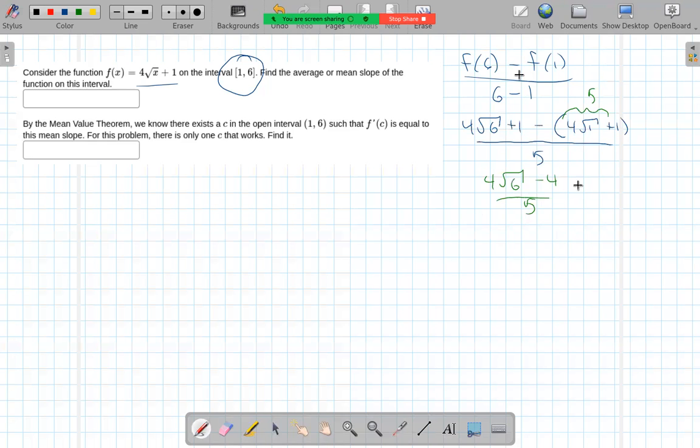And we could factor out the 4 that cleans things up a little bit. So maybe we could say this is 4 of 5th times the square root of 6 minus 1. Needs about the same amount of ink. So this is our average slope right there.